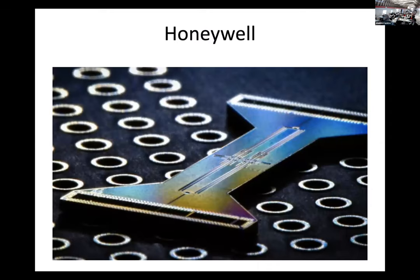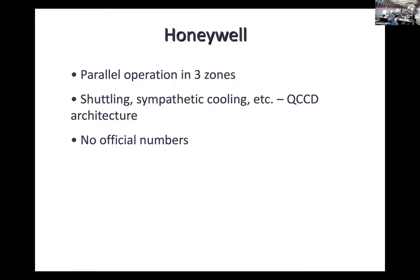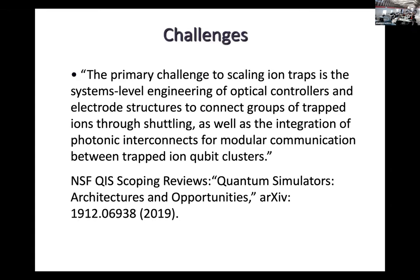Honeywell has a picture of a different trap — one with multiple zones where ions can be shuttled from one zone to another. They're pushing for parallel processing and are able to demonstrate parallel operations in three zones simultaneously — doing two-qubit gates on three different pairs of qubits at the same time. They use shuttling in the quantum CCD architecture with sympathetic cooling, implementing everything basically outlined in the Kielpinski, Monroe, and Wineland QCCD proposal. No official error numbers.